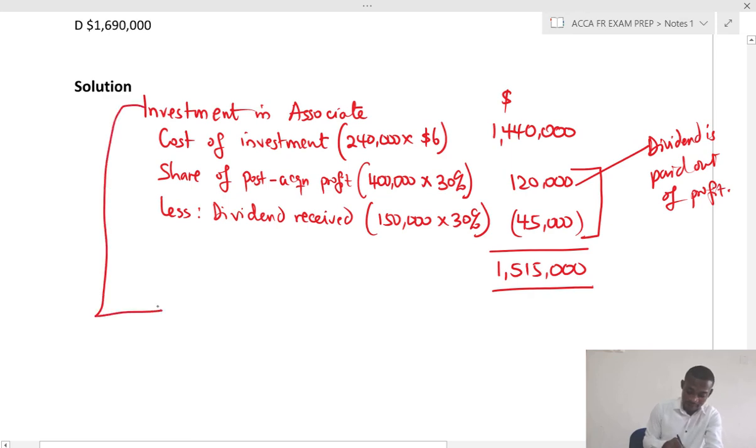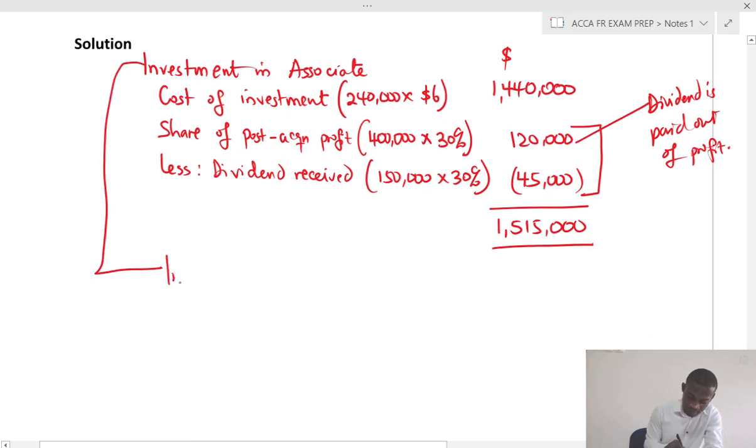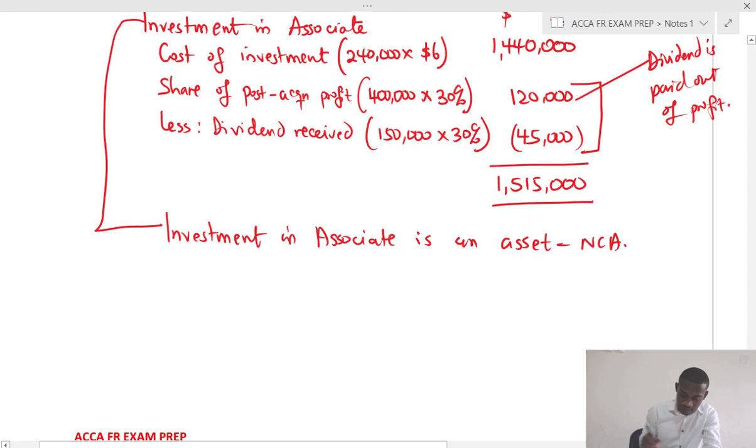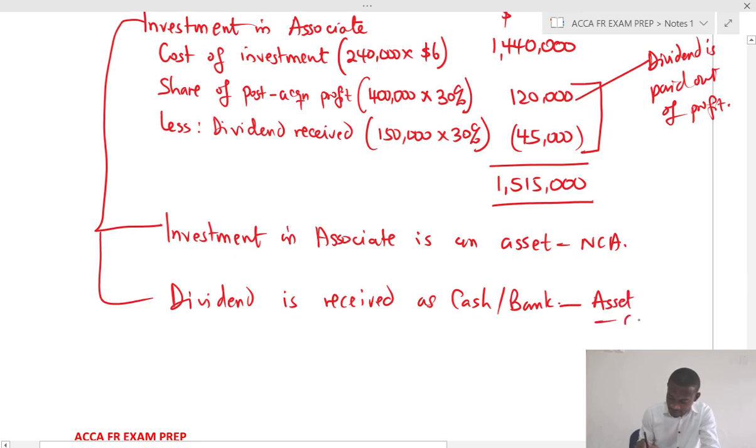Now in effect, remember the investment in associate is an asset. In fact, it's a non-current asset. Now the dividend is received as cash or bank. This is also an asset and it's a current asset. So in the total asset calculation, if you do not deduct the dividend from the profit in calculating the investment in associate, you will be double counting.